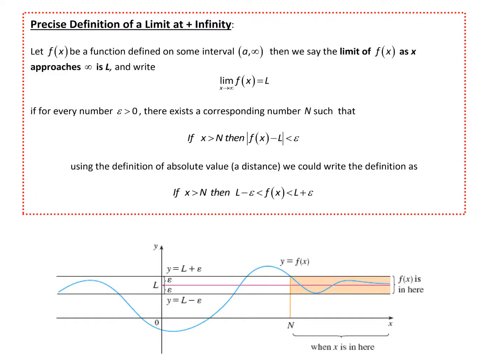The precise definition of a limit at infinity is on the screen. If we say the limit of f(x) as x approaches infinity is L, what we're saying precisely is that for every given epsilon greater than 0, we can find a number N such that as long as x is bigger than N, |f(x) - L| will be less than epsilon.